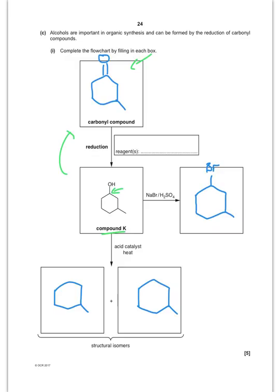so NaBH4, and you normally do that in water. So, that's going to give you your secondary alcohol. You're then going to react with sodium bromide and H2SO4. That, you remember, generates HBr in situ, and will allow you to do a nucleophilic substitution reaction on the OH group to give you your bromo alkane.